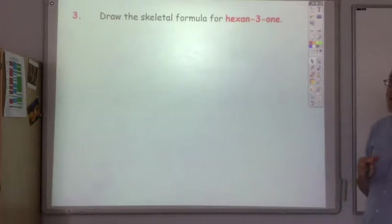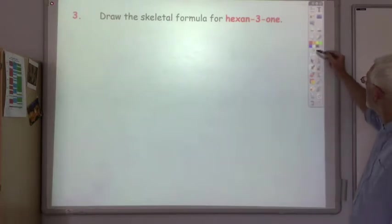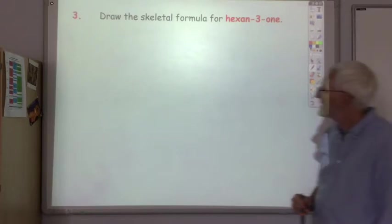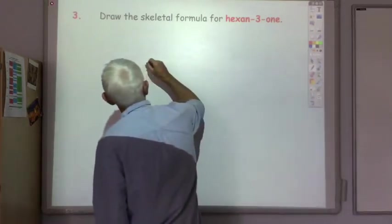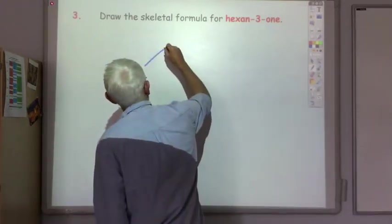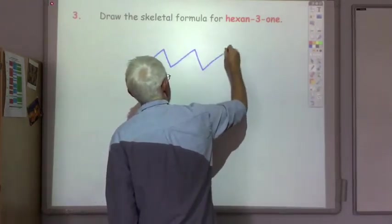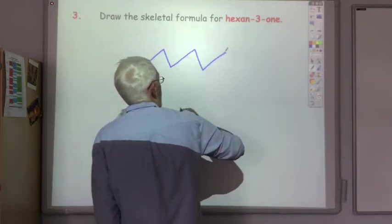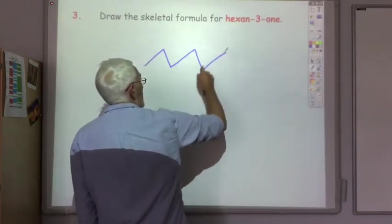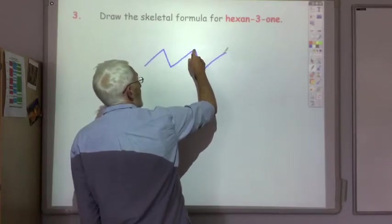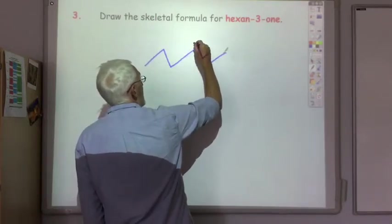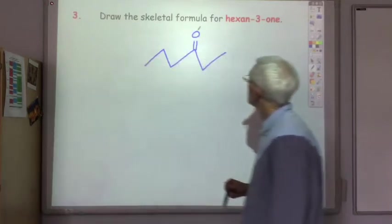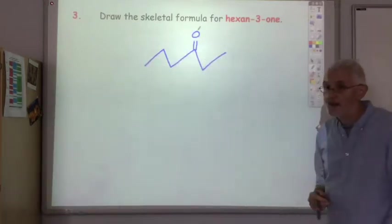Try to draw hexan-3-one. Hex means six carbons: one, two, three, four, five, six. It's a ketone on the third carbon — one, two, three — so we've got a C double bond O there. So there's hexan-3-one.